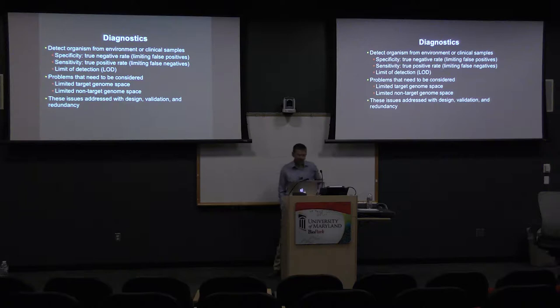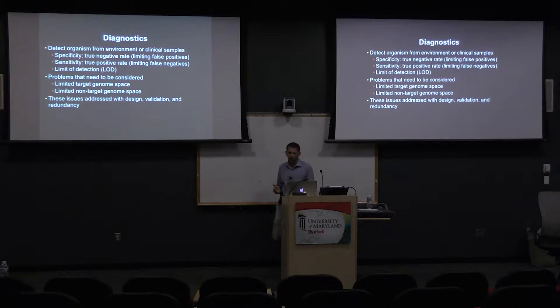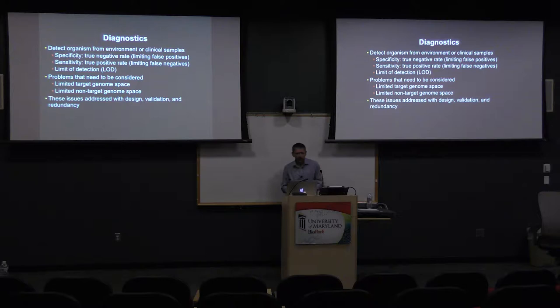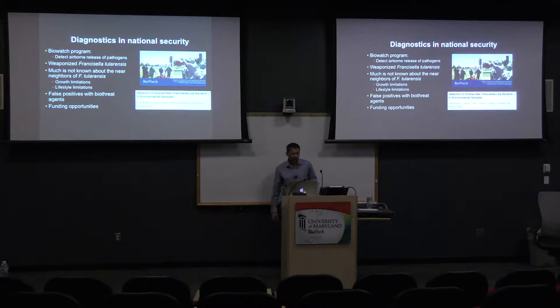There are several problems we need to address before designing diagnostics. First, sometimes we don't understand the target very well — if we don't have a large number of target genomes, we may miss a lot of diversity. There's also the problem of the non-target genome space, where a near-neighbor genome is really similar to your target but poorly characterized, leading to false positives. I'll talk about how these issues can be addressed through design, validation, and building in redundancy to allow for genomic variation.